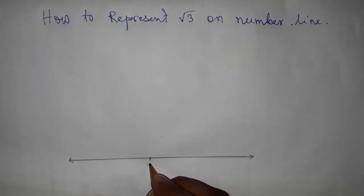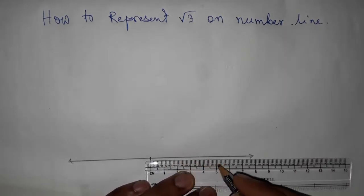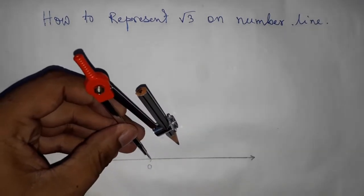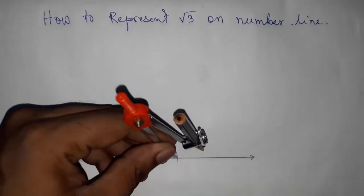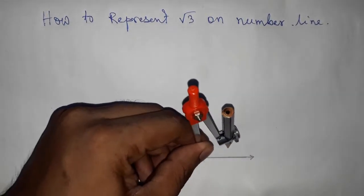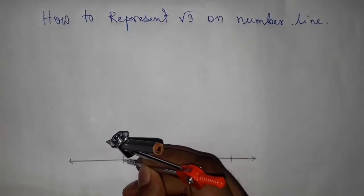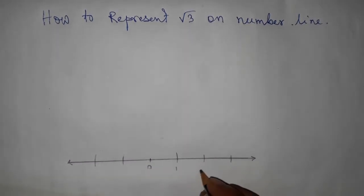Next, marking the numbers on the line. This is zero, and we can use a scale to mark all the numbers, or we can use a compass. So here I use a compass, taking an arbitrary length and cutting the line by this way to denote the numbers. So this is one, two, three, and this side is minus one and minus two.